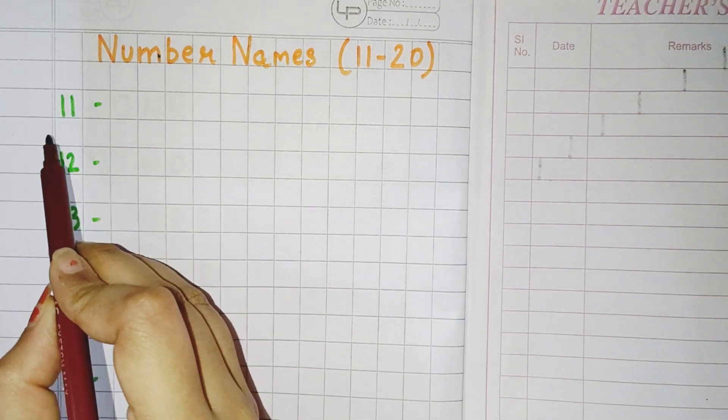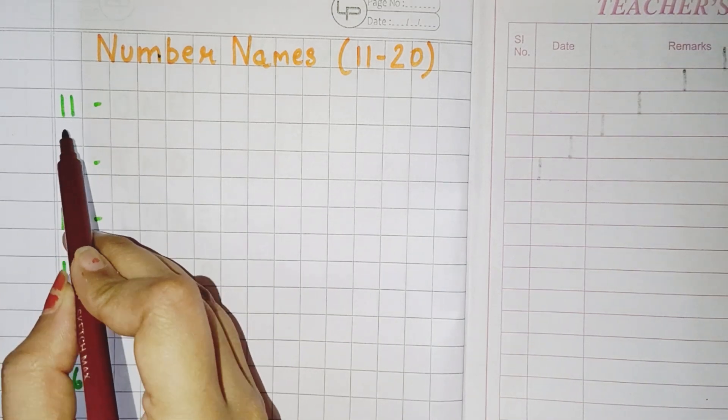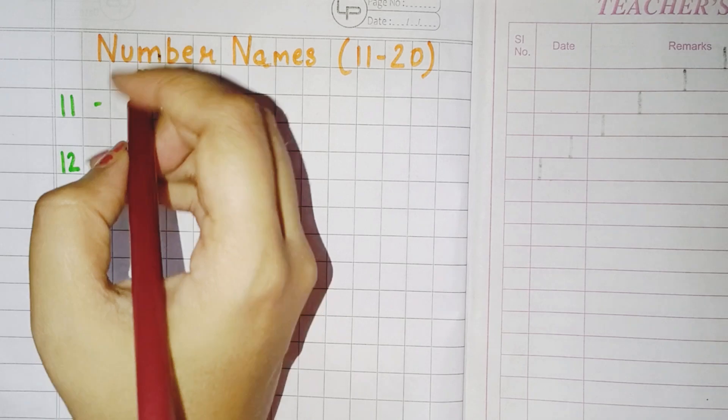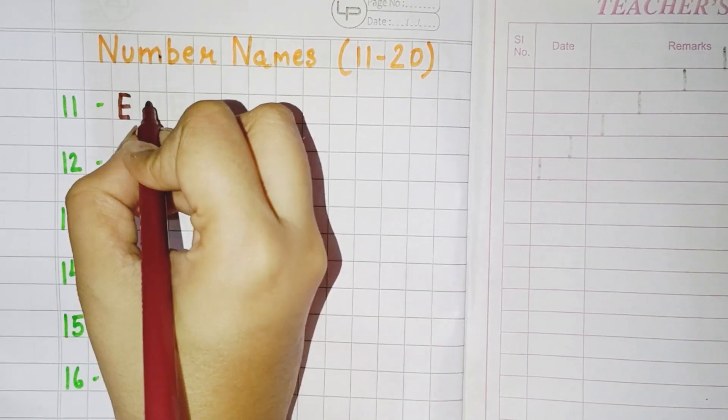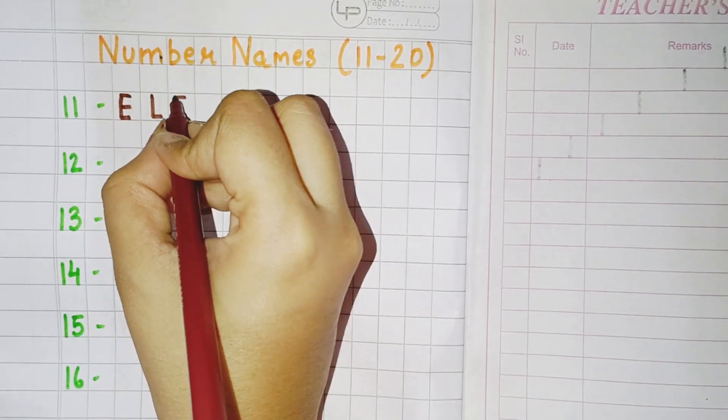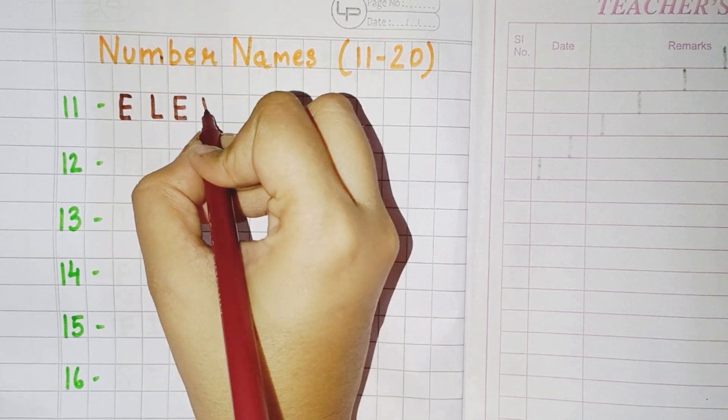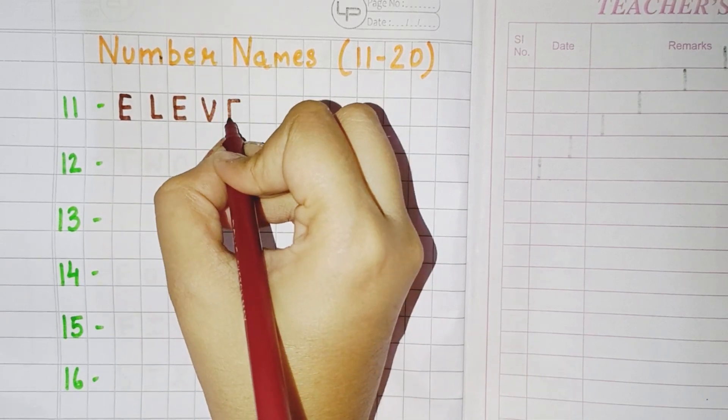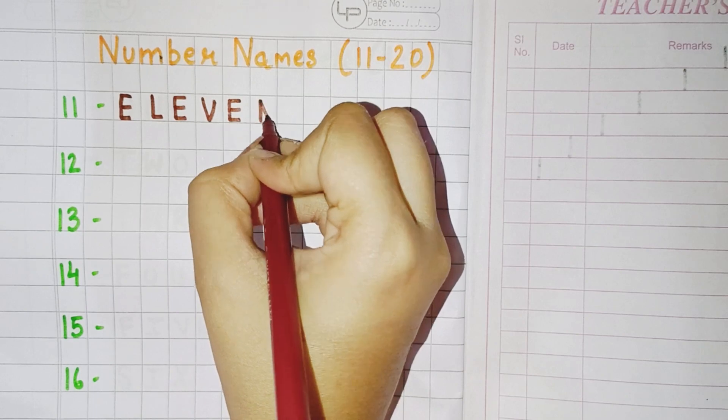What is this children? This is 11. So how will you write 11? You have to write E, L, E, V, E, N. Eleven.